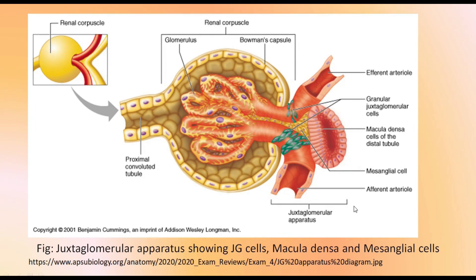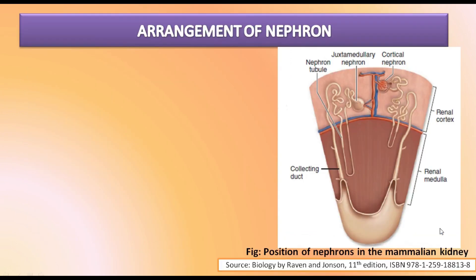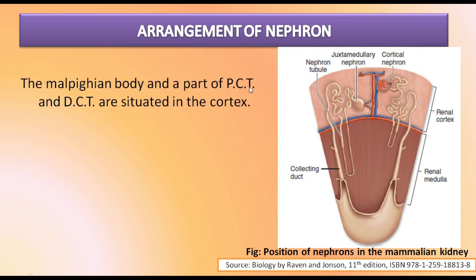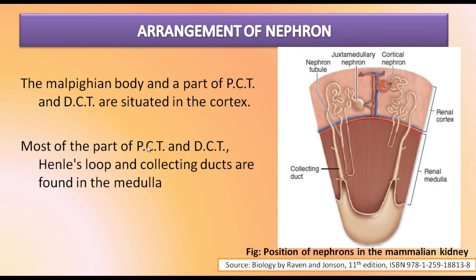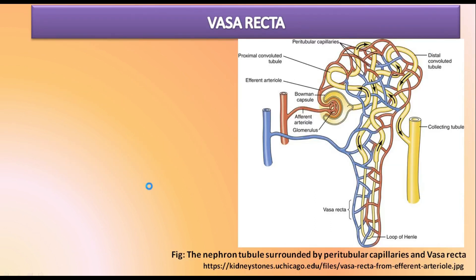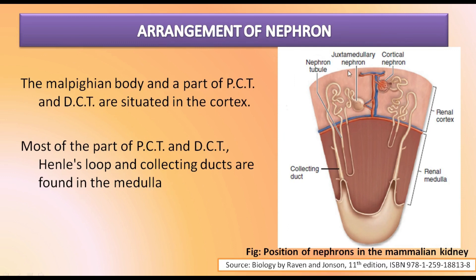This is a figure of the juxtaglomerular apparatus. The Malpighian body and parts of the proximal and distal convoluted tubules are situated in the cortex portion of the kidney, while most of the proximal convoluted tubule, distal convoluted tubule, Henle's loop, and collecting ducts are present in the medulla portion.